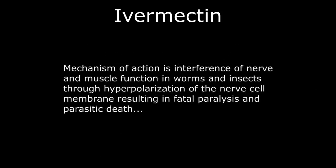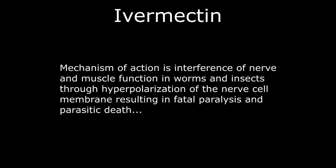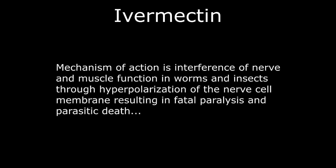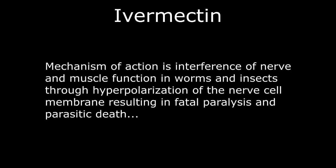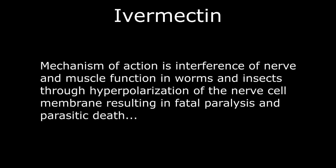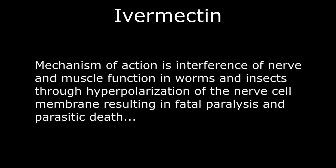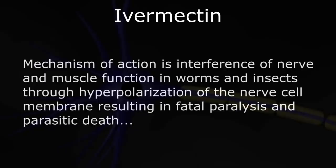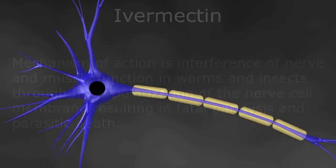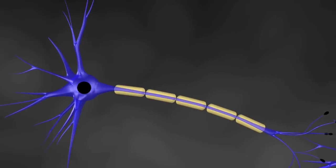Ivermectin's mechanism of action for parasitic infections is interference of nerve and muscle function in worms and insects through hyperpolarization of the nerve cell membrane, resulting in fatal paralysis and parasitic death. To understand all of this, let's first look at how the electrochemical signal is transmitted through a normal nerve cell.